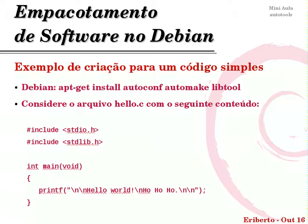Vamos ver como funciona isso na prática, em cima de um código. Se você estiver no Debian e quiser as ferramentas instaladas, basta fazer um apt-get install autoconf automake libtool. O código que vamos usar é um simples Hello World em C. Como não tem library envolvida, não vamos usar o LibTool — apenas AutoConf e AutoMake. Pause o vídeo e copie o código para um arquivo chamado hello.c se quiser praticar.